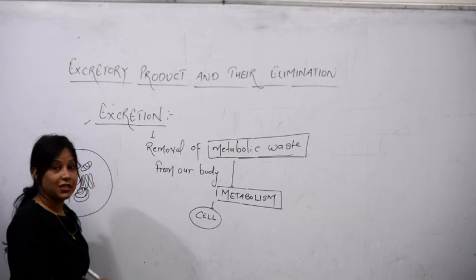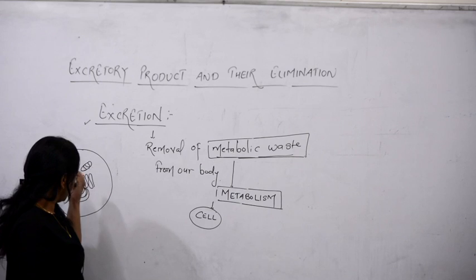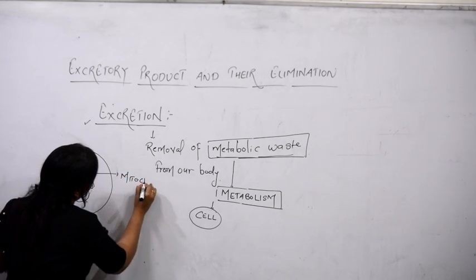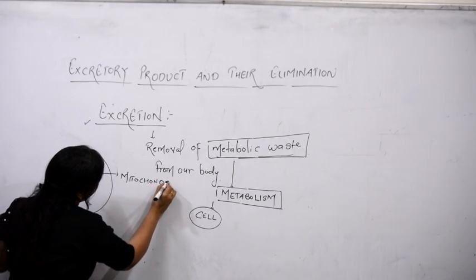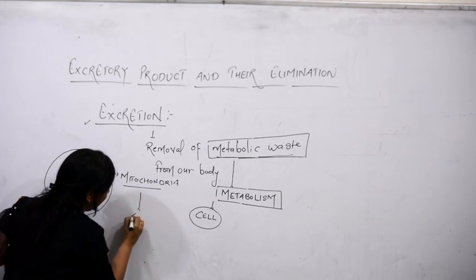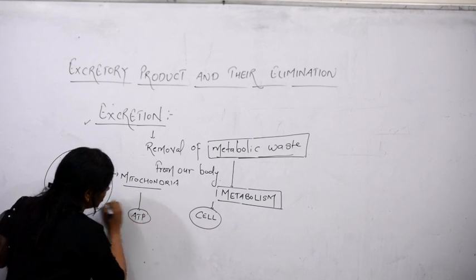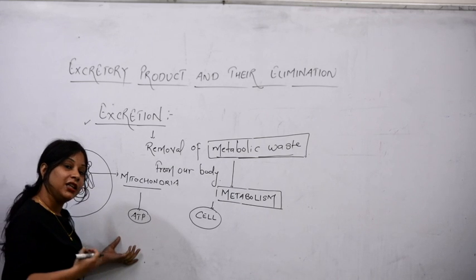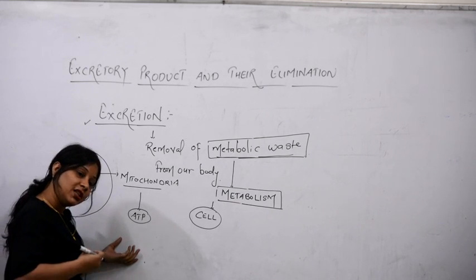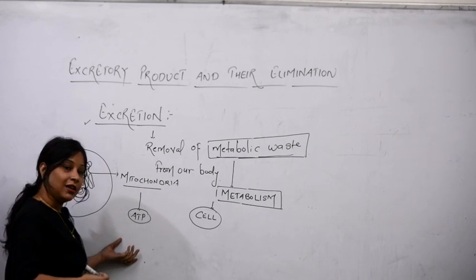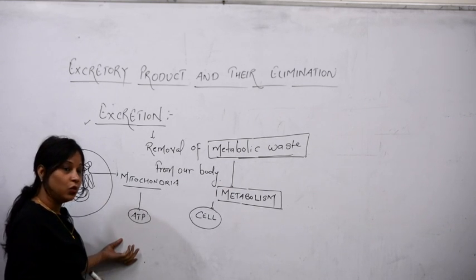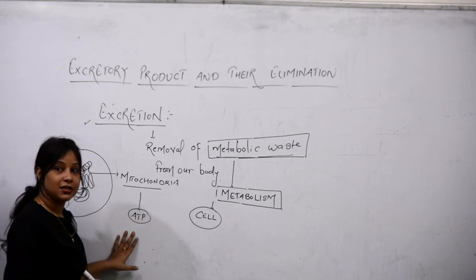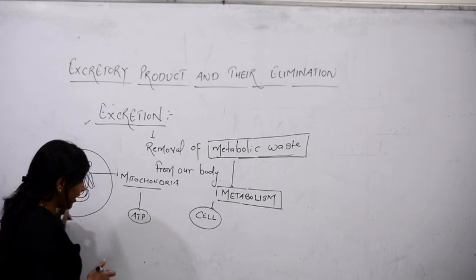For example, if we talk about the mitochondria — mitochondria is the powerhouse of the cell because it forms ATP. The question is: how is ATP formed inside the mitochondria? Simply, we take in oxygen; this oxygen goes inside the cell, where it breaks down glucose. Through the breakdown of glucose, energy is released in the form of ATP.